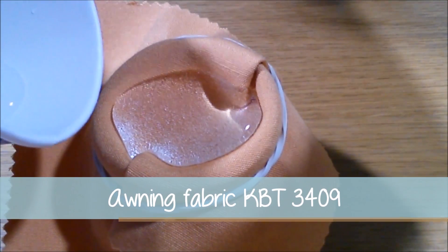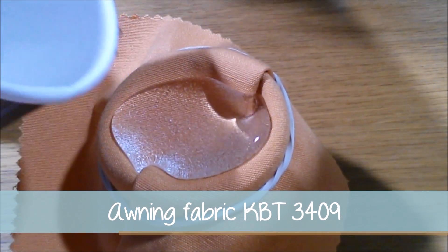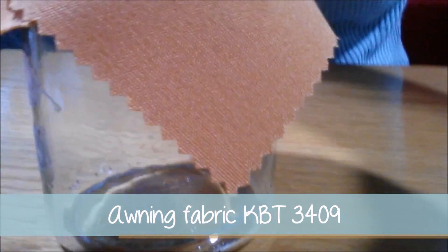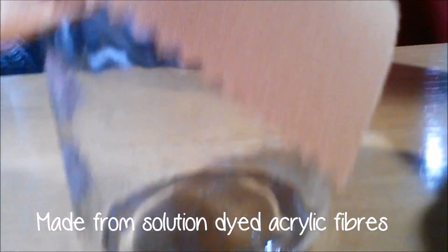Awning fabric is used to shade and protect windows from the sun, rain, and other harsh weather conditions. Our awning fabric comes in over 50 colors and is a very sturdy material made from solution dyed acrylic fibers.